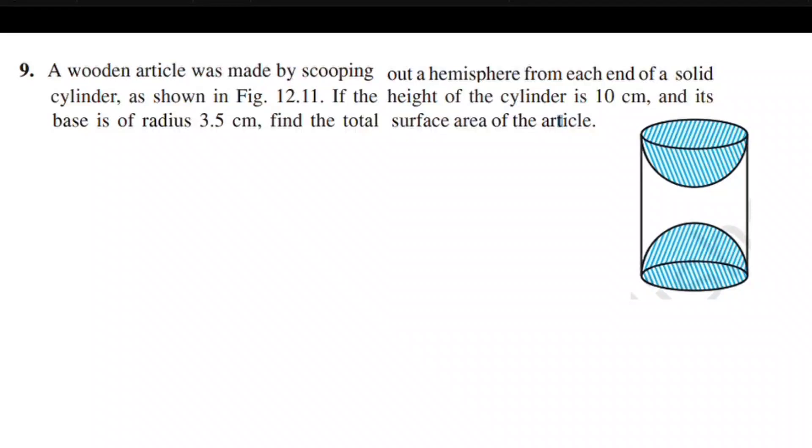How to do exercise 12.1 question number 9. A wooden article was made by scooping out a hemisphere from each end of a solid cylinder as shown in the figure. If the height of the cylinder is 10 cm and its base is of radius 3.5 cm, find the total surface area of the article.